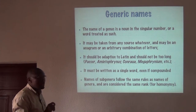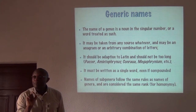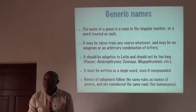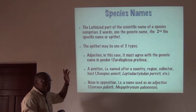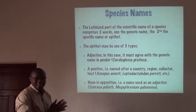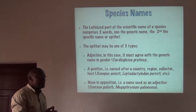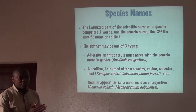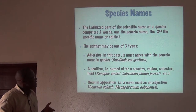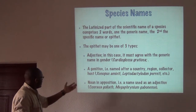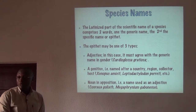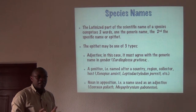Names of subgenera are treated exactly as names of genera and follow exactly the same rules, including with respect to homonymy. The Latinized part of the scientific name of a species comprises two words: the generic name and the specific name or epithet. The epithet may be one of three types: an adjective, in which case it must agree with the generic name in gender; a genitive, named after a country, region, or collector; or a noun in apposition, a noun used as an adjective.